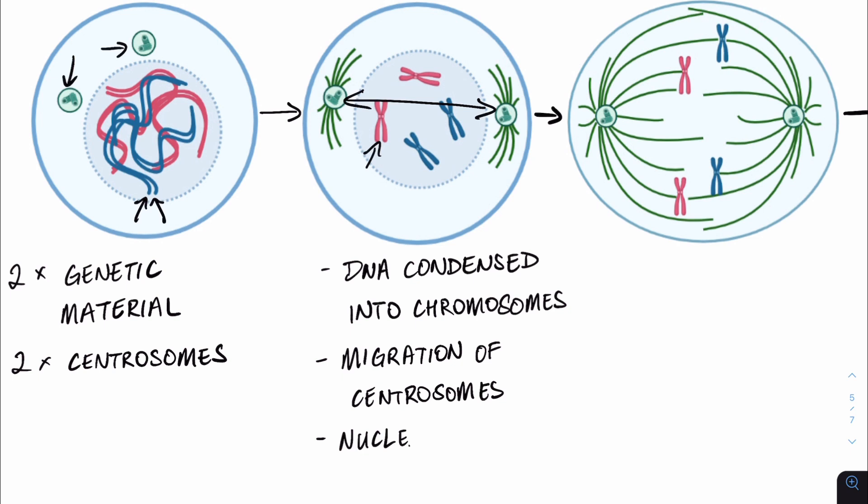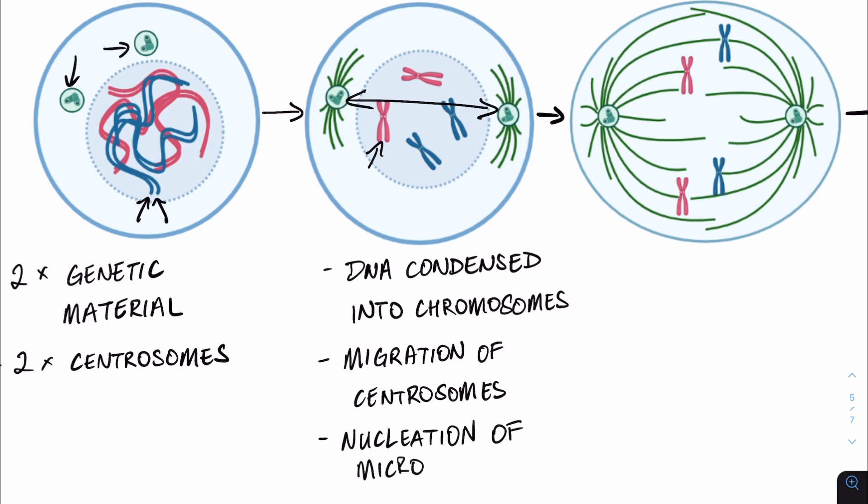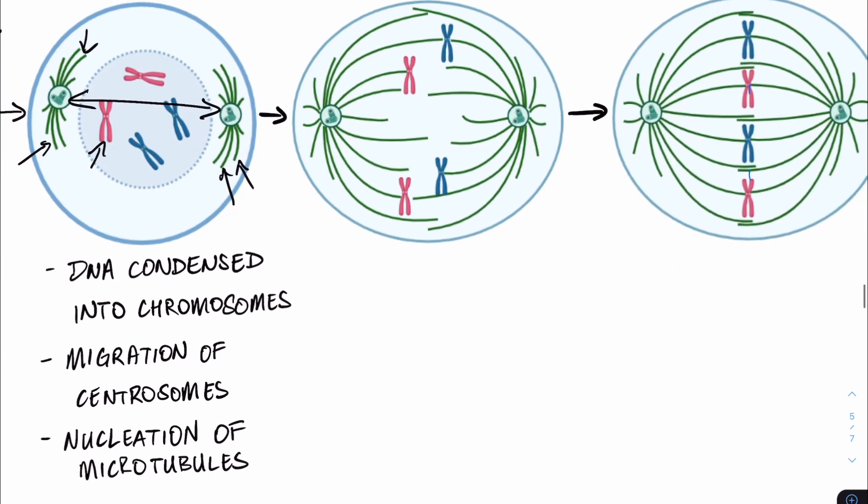And lastly, having a look at what's coming out of the centrosomes, these green strands are the microtubules, and the centrosomes are responsible for nucleating and elongating the microtubules to prepare us for the next phase, which is prometaphase or late prophase.